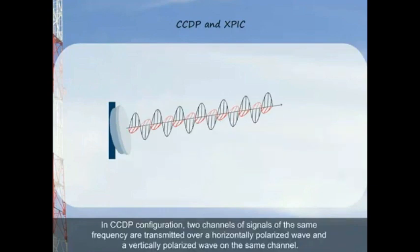In a CCDP configuration, two channels of signals from the same frequency are transmitted over a horizontally polarized wave and a vertically polarized wave on the same channel.